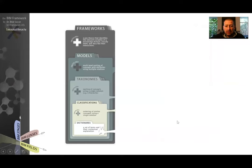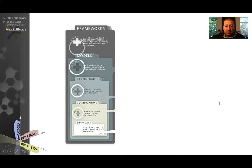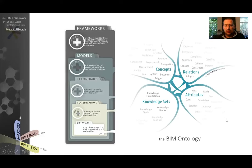Now, to connect all these together — all these terms, classifications, taxonomies, and models — if there's nothing connecting them, we really cannot benefit from them. We cannot build taxonomies out of classifications, or models out of taxonomies, or frameworks out of models without something connecting them. The BIM Framework uses a conceptual glue, which is called the BIM Ontology. Think of it as a very structured language that helps connect these conceptual parts together in order for them to work together. I'll be covering the BIM Ontology in a separate video in the future.